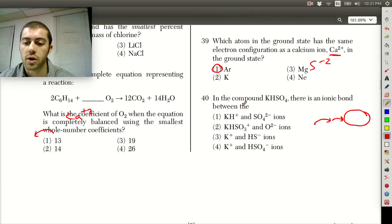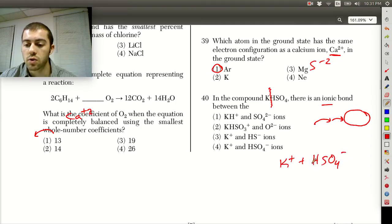For question 40 here, on compound KHSO4, there's an ionic bond between what? So the first thing you have to identify with this problem, if it's ionic bonding, there has to be some sort of breakup here between the two ions. So here, the way that it would make sense to break this up is between the potassium and the HSO4 ion. So K plus plus HSO4 minus. Those would be our two ions here. So this kind of gives the answer away already, but this is going to be K plus and HSO4 minus.